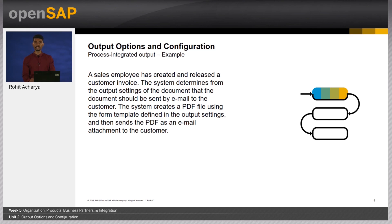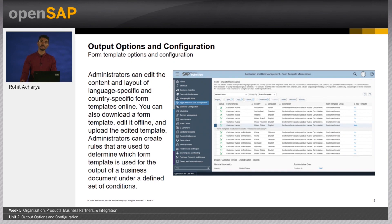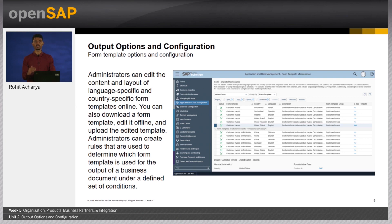We will see this more in detail in the demo. You can also configure the various form elements of the business document. Administrators can edit the content, layout, and language-specific and country-specific form templates online. You can also download a form template, edit it offline, and upload the edited template. Administrators can create rules to determine which form template is used for the output of a business document under a defined set of conditions.